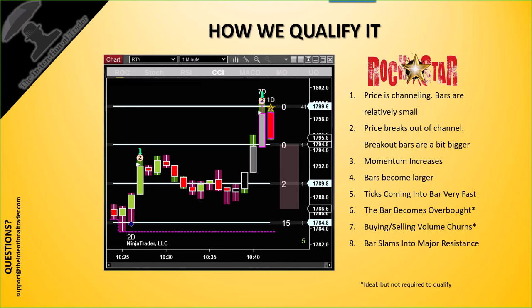We use a major line of resistance — floor trader pivots, mid-pivots, and a couple of other lines that most people are looking at. What gives support and resistance their value? It has value because people think it has value. They've been using floor trader pivots since the beginning of time, and it's become a self-fulfilling prophecy. If we know other traders are watching those lines, we should be watching them too.